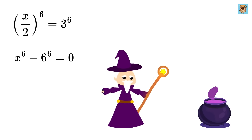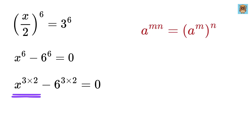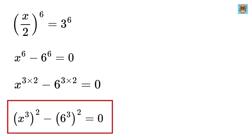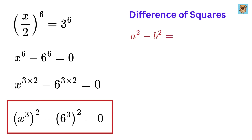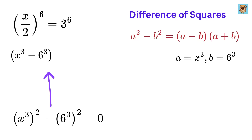Now here comes the real magic. We use the exponent rule: a raised to the power m times n can also be written as a raised to m, whole raised to n. Since 6 can be written as 3 times 2, x to the 6 becomes x cubed, whole squared, and 6 to the 6 becomes 6 cubed, whole squared. Notice that our equation is now a difference of squares. The difference of squares formula states that a squared minus b squared equals a minus b multiplied by a plus b. Setting a as x cubed and b as 6 cubed, this becomes x cubed minus 6 cubed, multiplied by x cubed plus 6 cubed, equals 0.